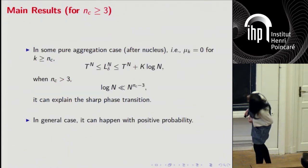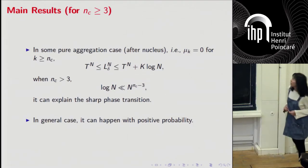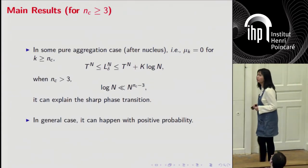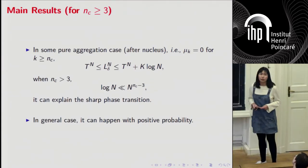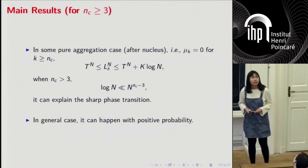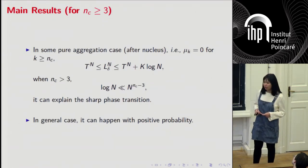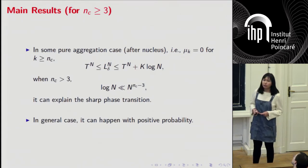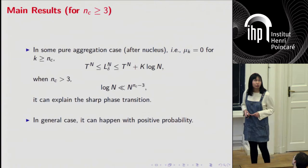We can prove that for the case with only aggregation after the nucleus size, with very high probability, this very sharp transition can happen. But in the general fragmentation case, we can show now, so far we can only show it can happen with positive probability.